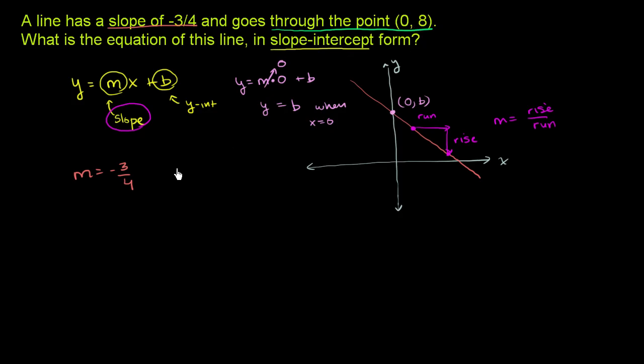So b, we could say, we could do a couple things. Our y-intercept is the point 0 comma 8. Or we could say that b, remember, it's also 0 comma b. We could say b is equal to 8.